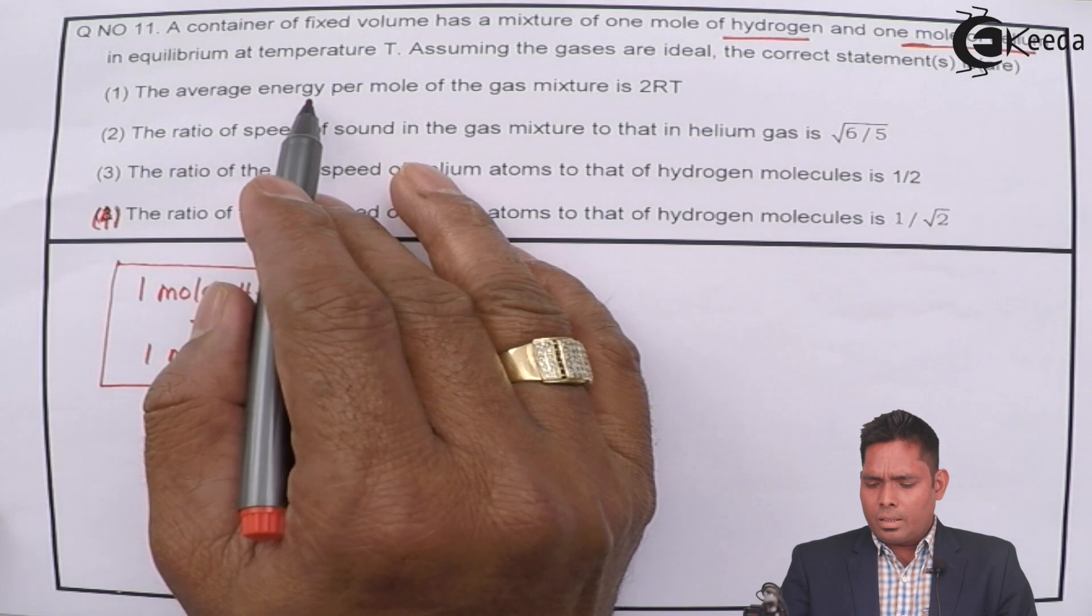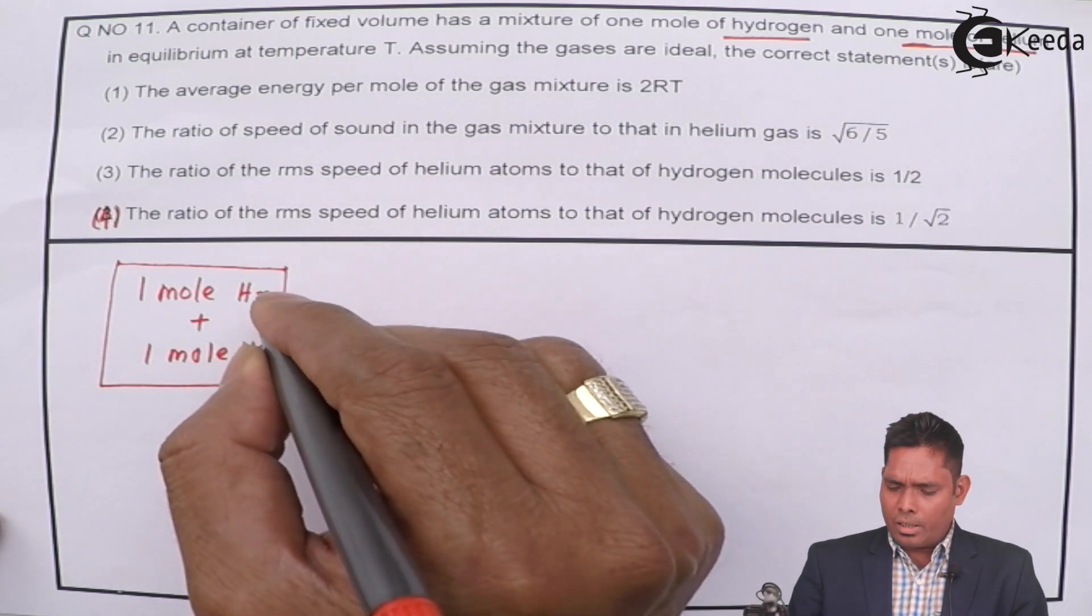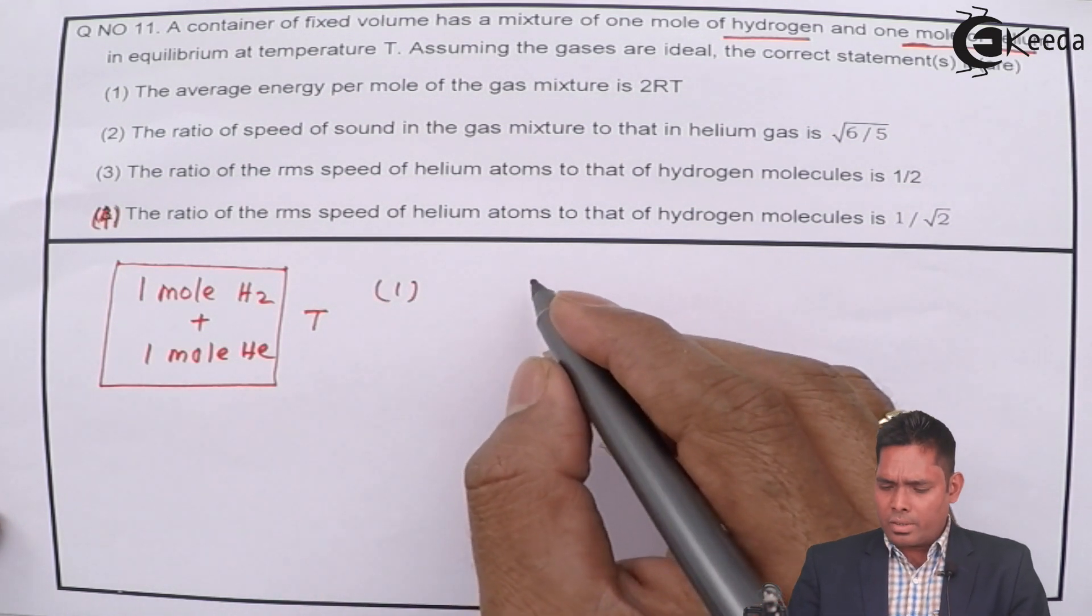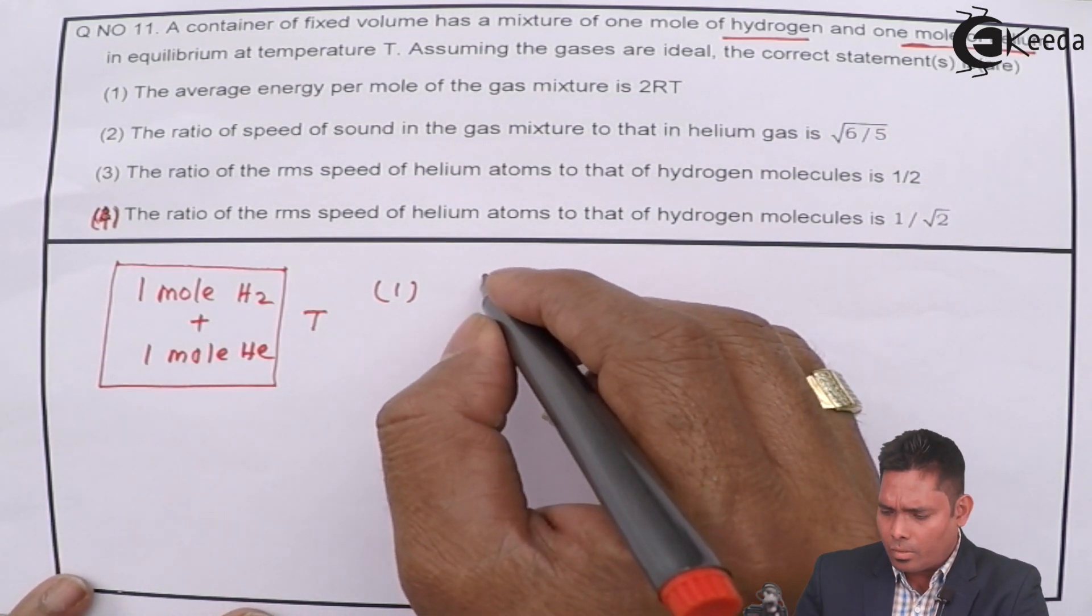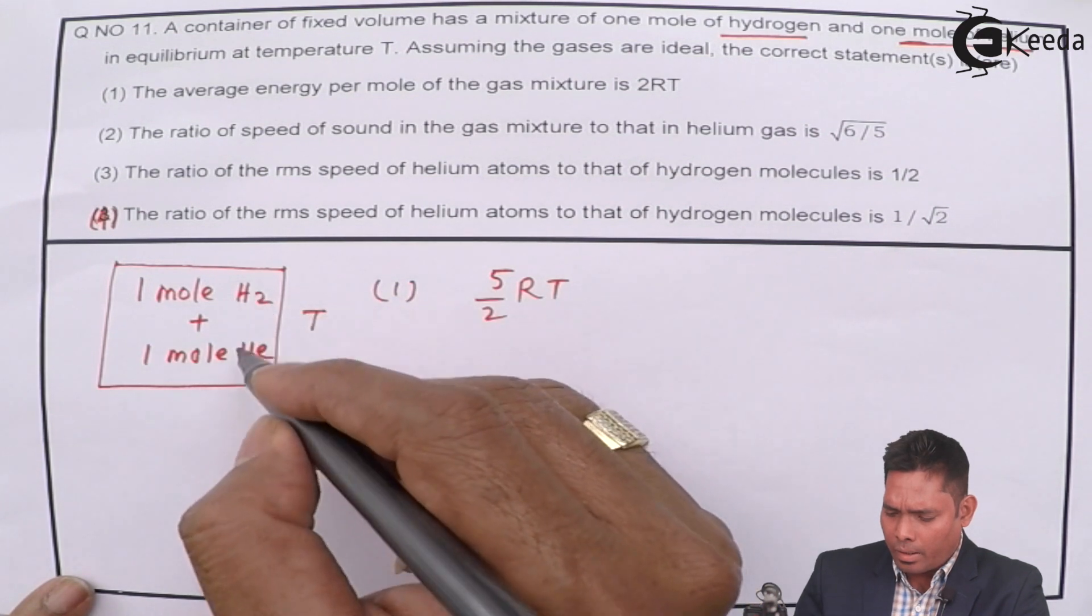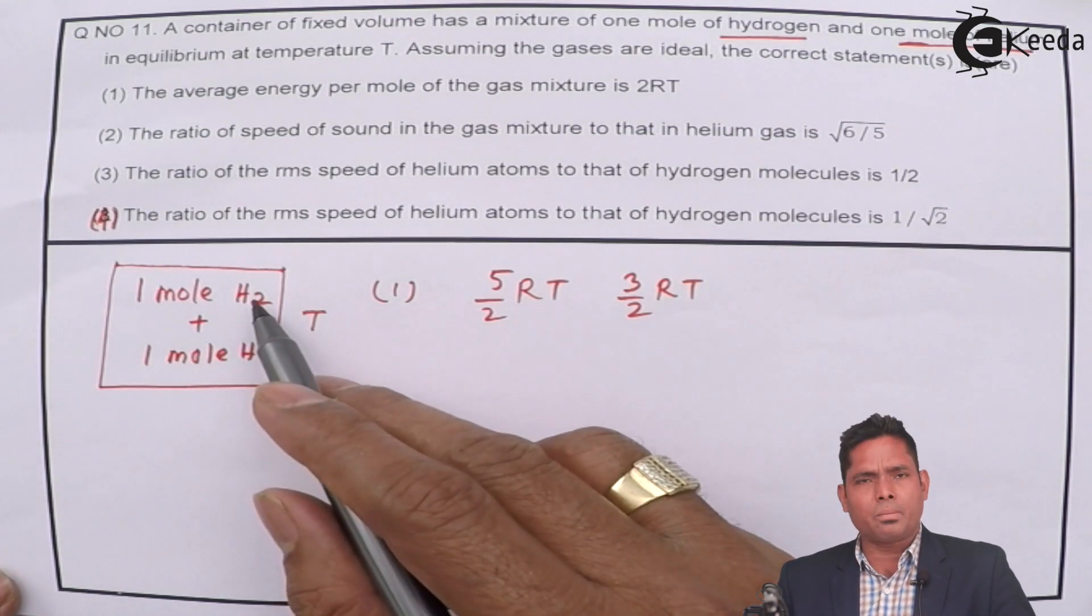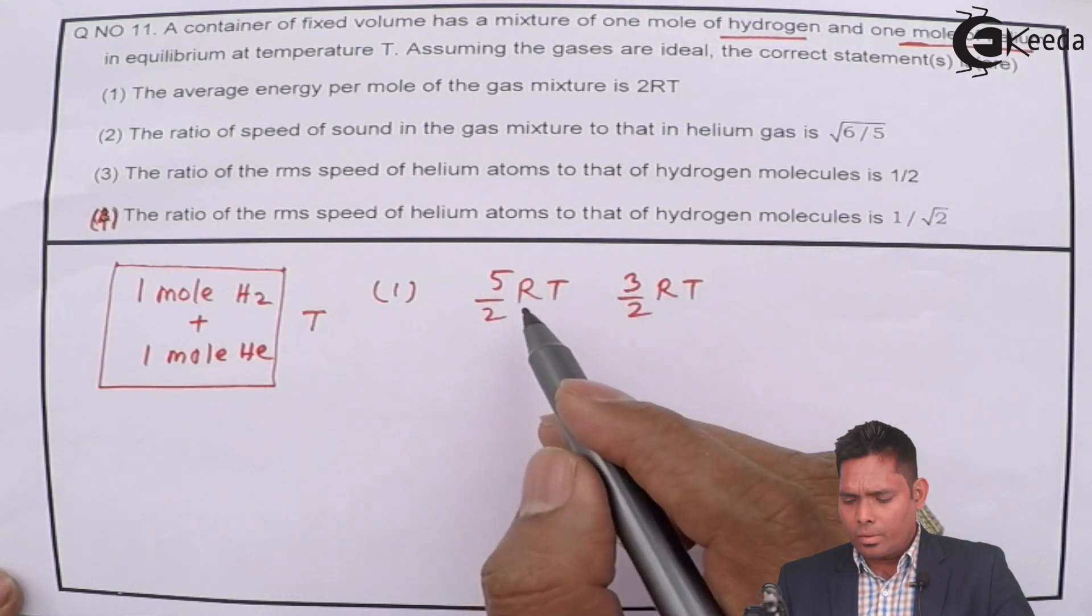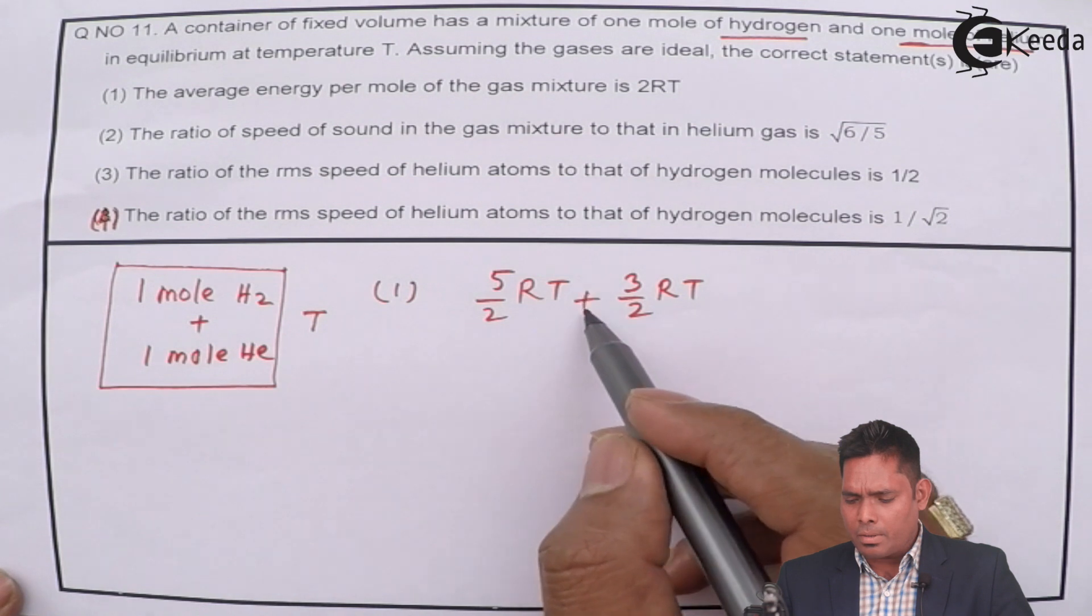The average energy per mole of the gaseous mixture - for option one, the average energy for hydrogen is 5/2 RT and for helium it is 3/2 RT, because helium is monatomic and hydrogen is diatomic. So the degrees of freedom is 5 for hydrogen and 3 for helium. The average value is divided by 2.